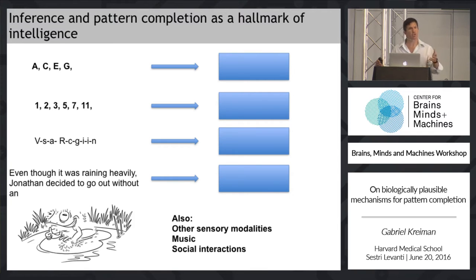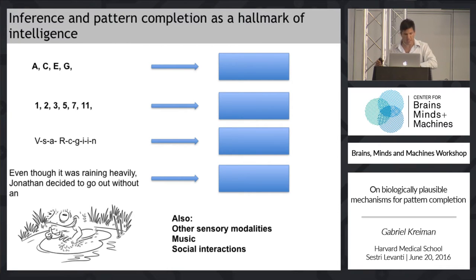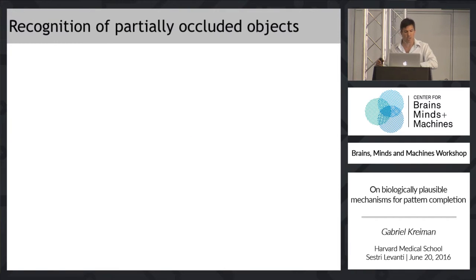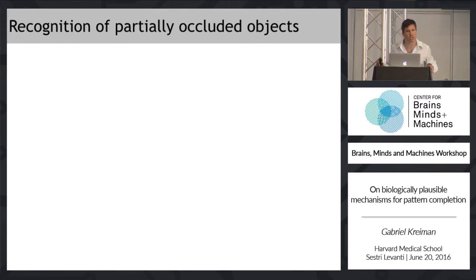Even in social interactions, we can read social interactions from just a couple of seconds of basic information. My talk will concern our ability to recognize heavily occluded objects and studying pattern completion in the context of visual shape recognition.